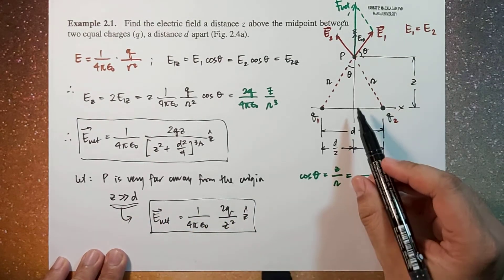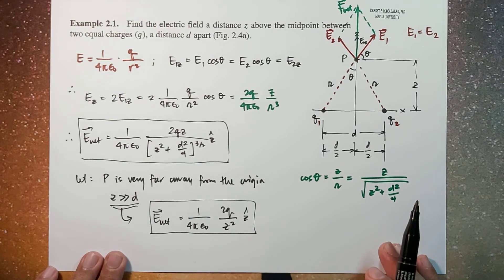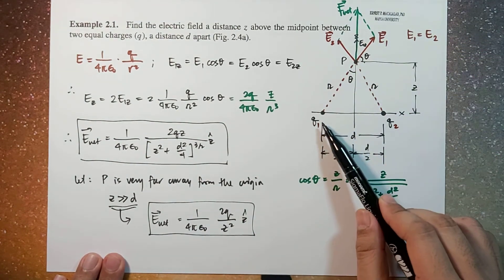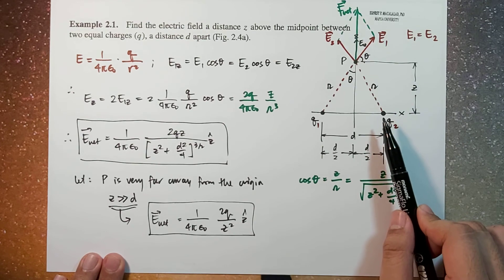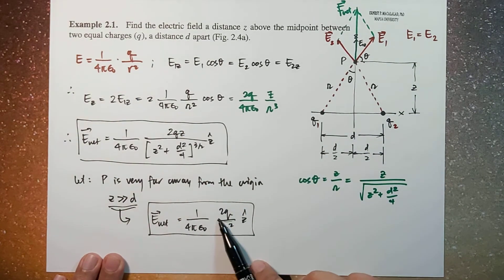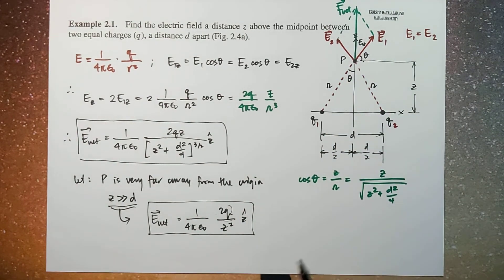So what this means is that for points very far away from the origin, the distance between the two charges no longer matters. From the perspective of our point P, the two charges are equivalent to one charge with total charge 2q — you notice this is 1 over 4πε₀ times the combined charge of q1 and q2 divided by the distance squared. Very simple! That's all for now, thank you for watching, and I'll see you guys in the next video!